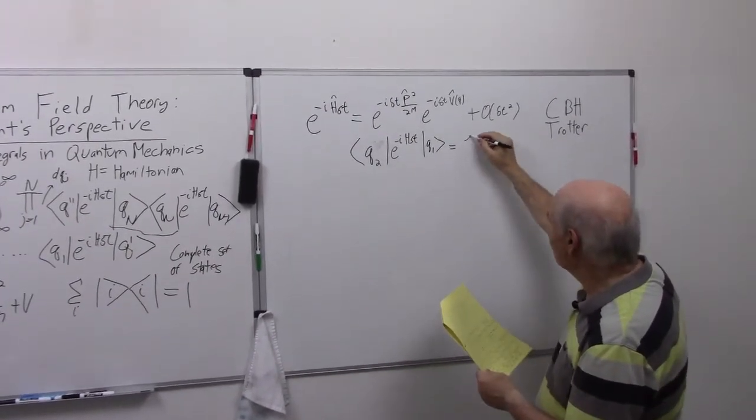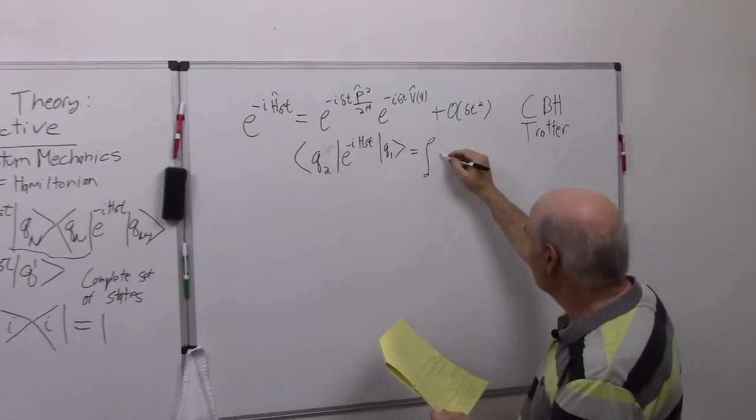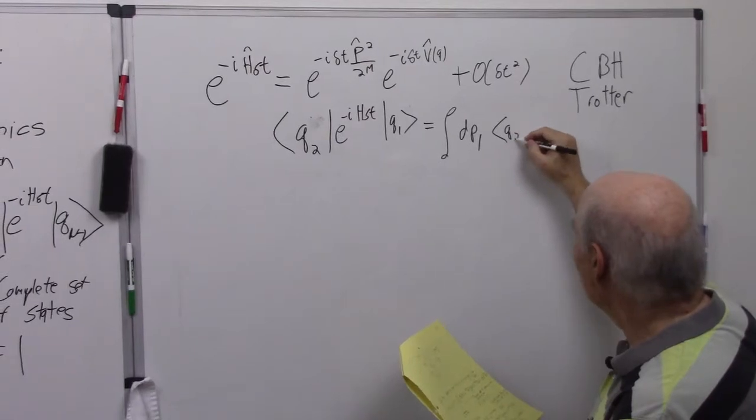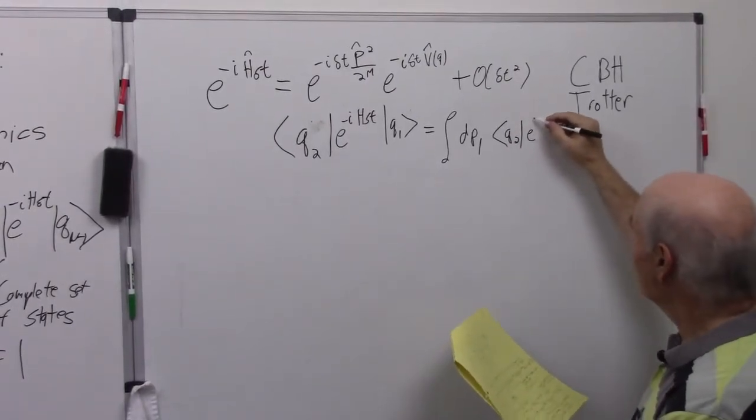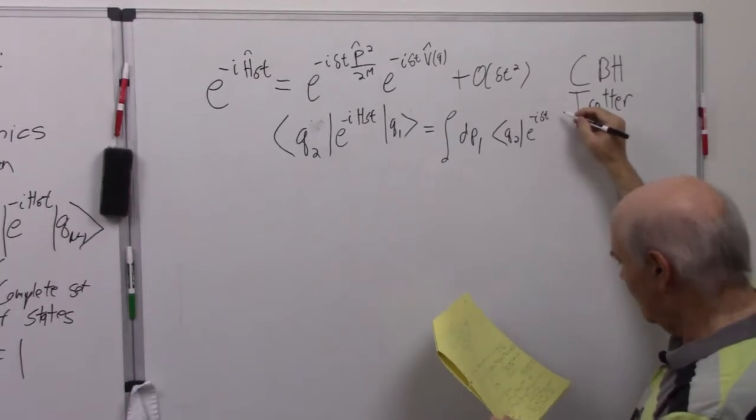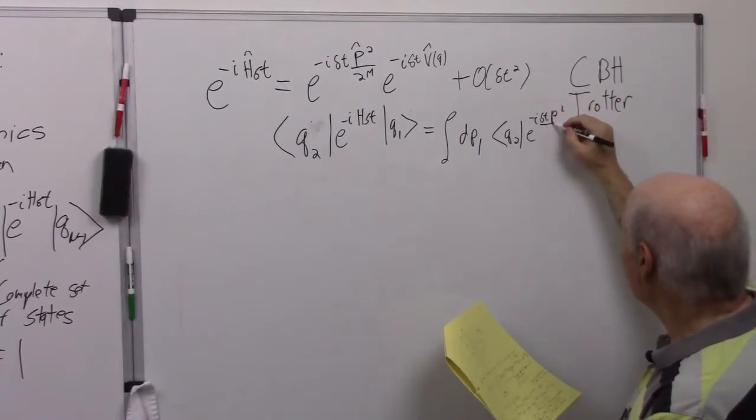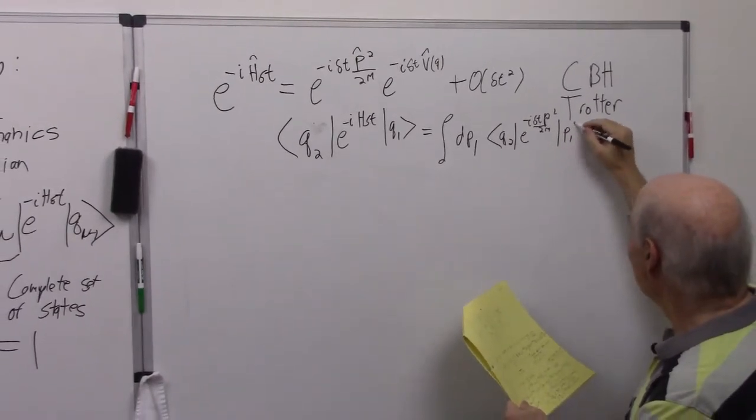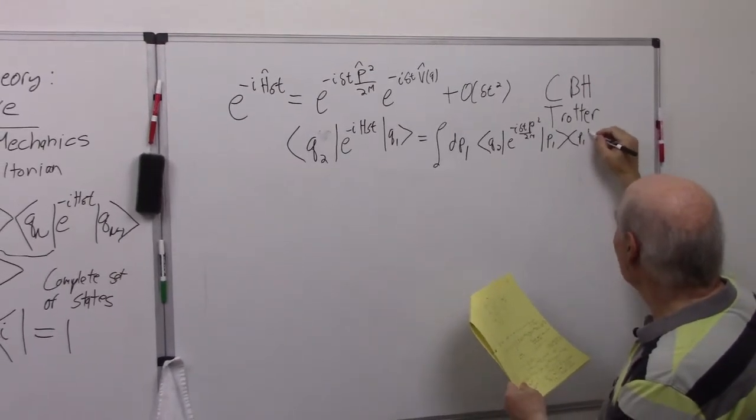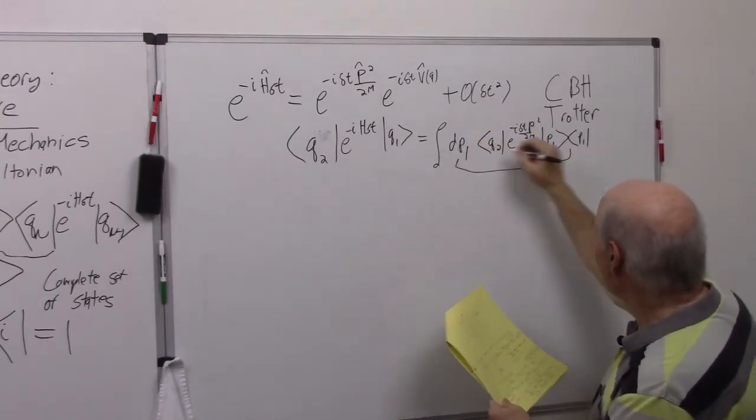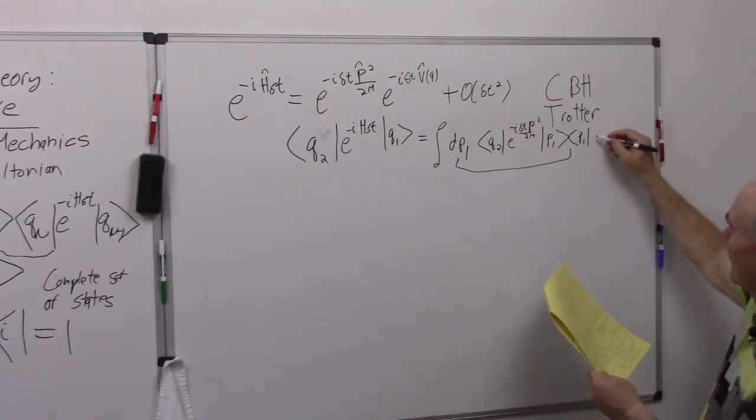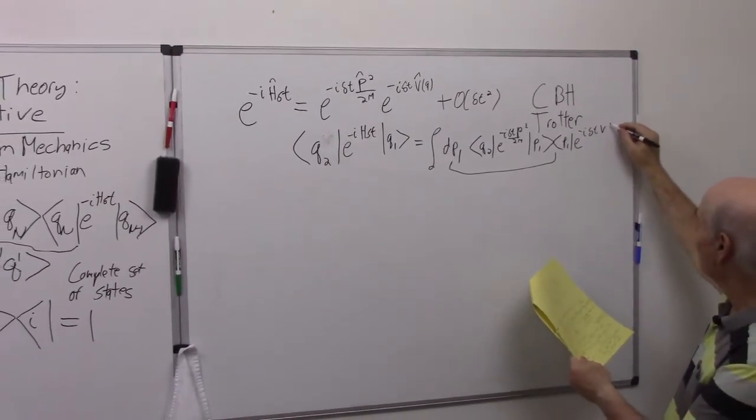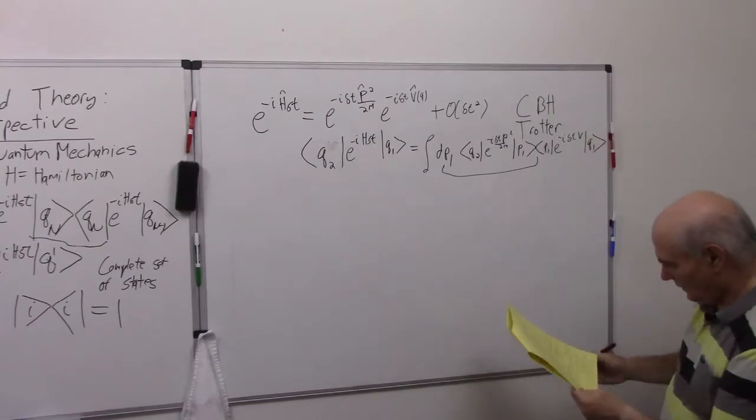So I'm going to have the integral of dp1, q2, e to the minus i delta t p squared over 2m, p1, p1. Notice with this integral, this is a factor of 1. And I have e to minus i delta t V, q1.